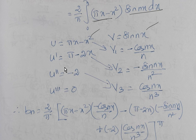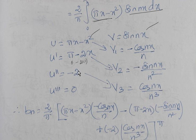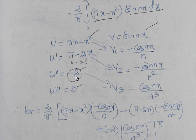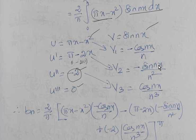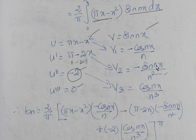Computing the derivatives: u = πx - x², u' = π - 2x, u'' = -2, and u''' = 0, which is a pure constant. So the differentiation stops. For the v integrals: v₁ = -cos(nx)/n, v₂ = -sin(nx)/n², v₃ = cos(nx)/n³.